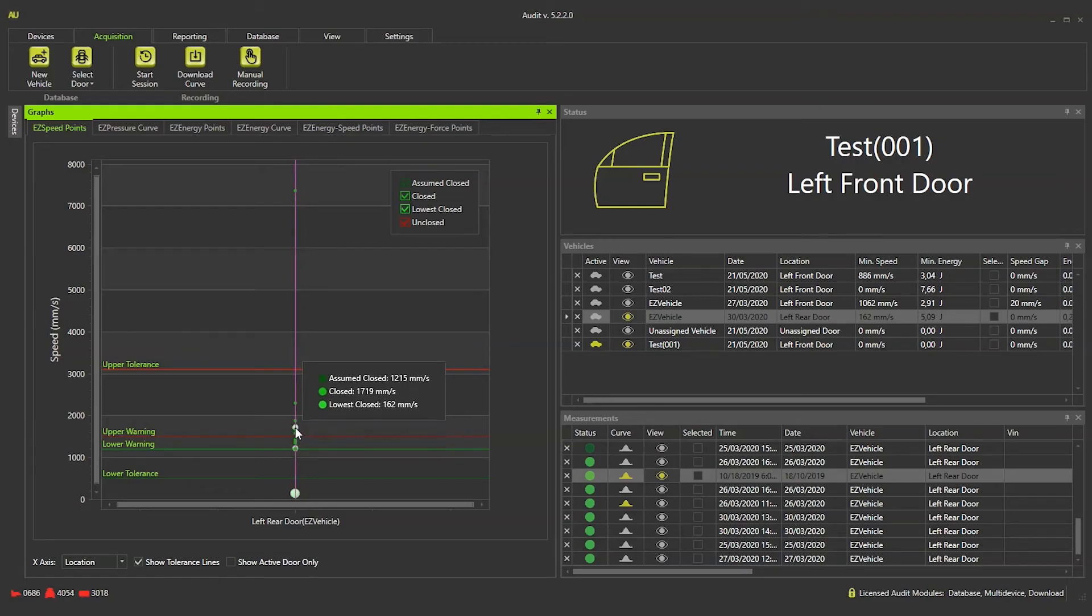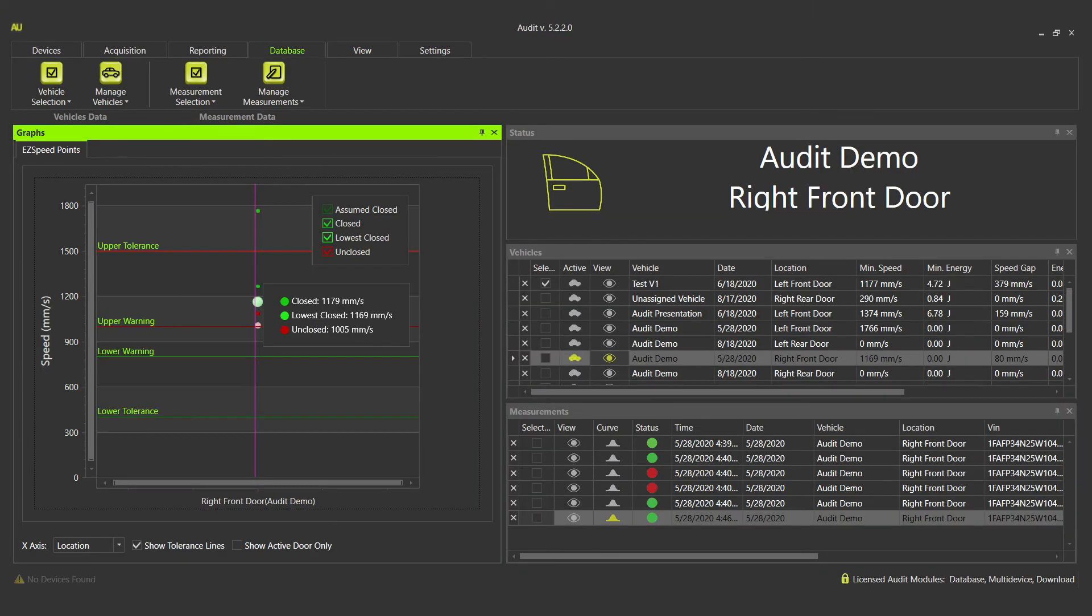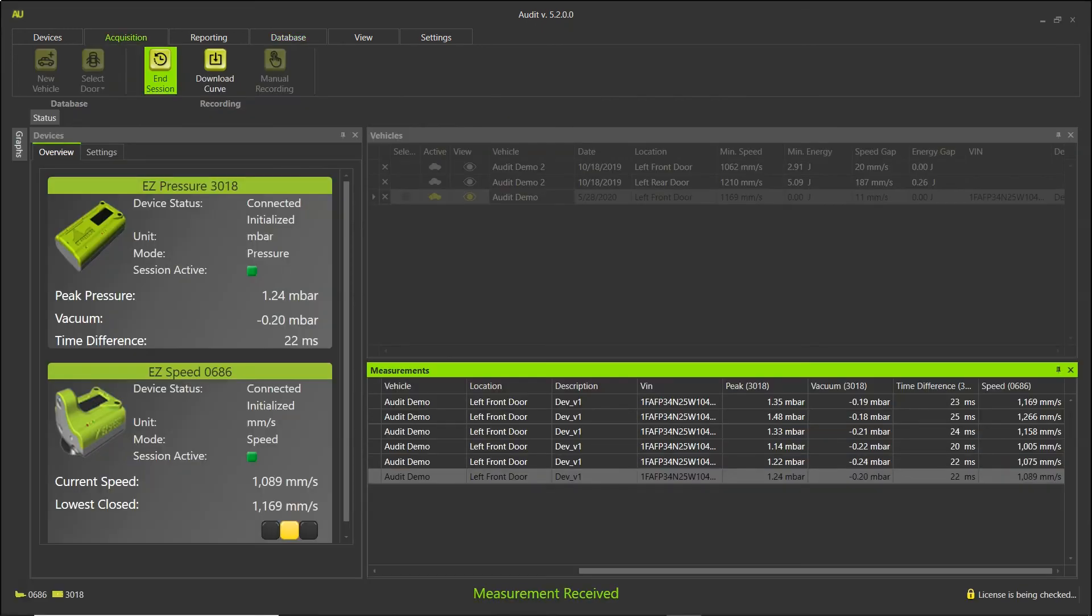Audit is our development and benchmarking software and expands EZSpeed use by adding vehicle tracking, instant measurement graphing, and side-by-side comparisons for multiple doors.